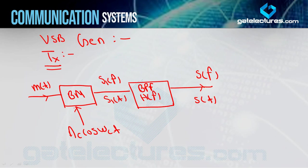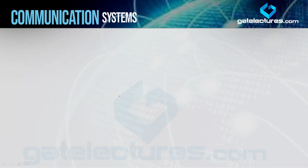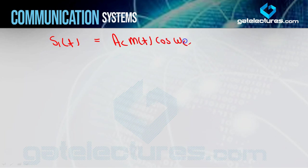Now, humein pata hai ki jo balance modulator hota hai, woh time domain mein do signal ko multiply kar deta hai. Toh yahan par jo aapka S1T hoga, basically S1T kya ho jayega aapka: AC × MT × cos(ωC·T). Aur yahi hamara standard equation hota hai DSBSC ka. Aise hi hum DSBSC generate karte hain - message aur carrier aapke multiply ho jaate hain.